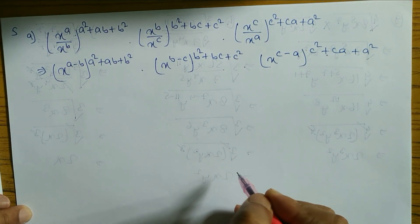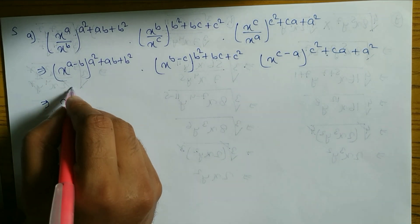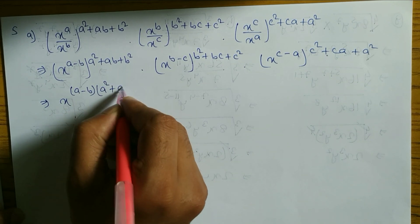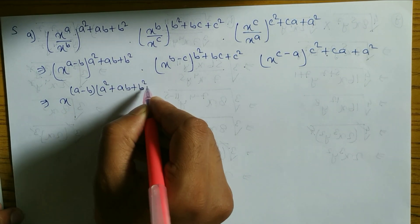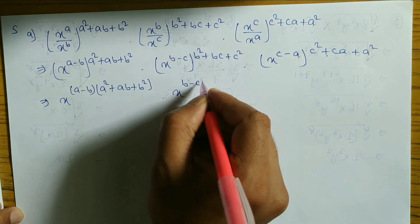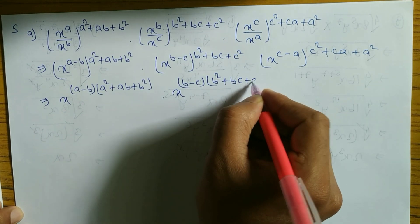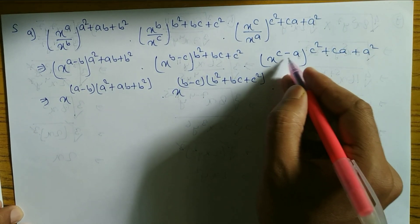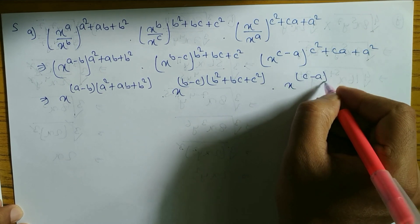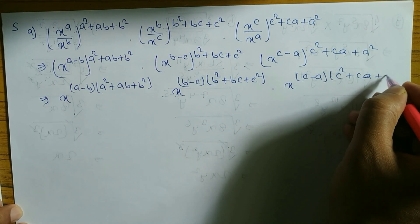Now we have to use the power rule — power times power, we have to multiply. So x to the power: a minus b times a squared plus ab plus b squared. Similarly this one also same: x to the power b minus c times b squared plus bc plus c squared. Similarly here also, power rule — power times power multiply: c minus a times c squared plus ca plus a squared.